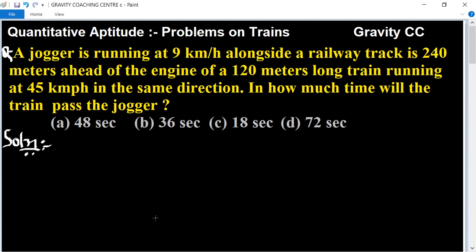A jogger is running at 9 kmph alongside a railway track, 240 meters ahead of the engine of a 120 meter long train running at 45 kmph in the same direction. In how much time will the train pass the jogger?